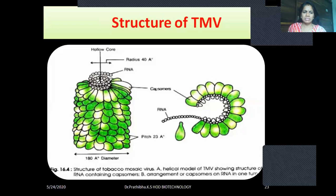Now let us go through the structure of TMV — a helical model showing the structure of RNA-containing capsomeres. The arrangement of capsomeres and RNA can be seen here. You can see the hollow center with a radius of 40 angstrom. Here you can see the RNA molecule as the genetic material and the capsomeres. The RNA molecule is bound with capsomeres. The pitch is 23 angstrom and the diameter is 180 angstrom.